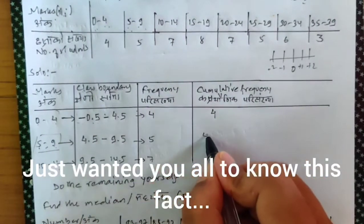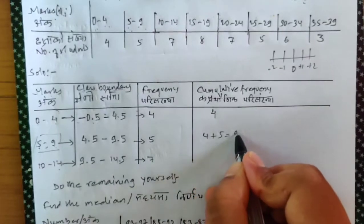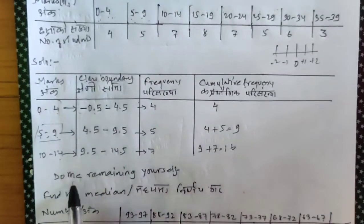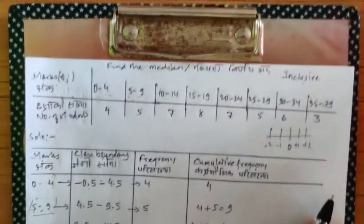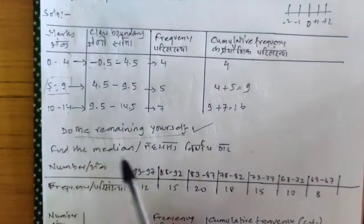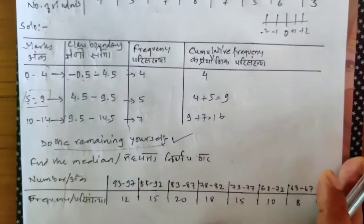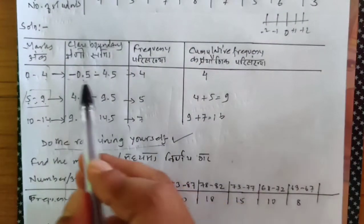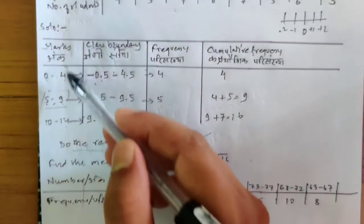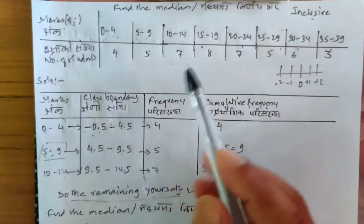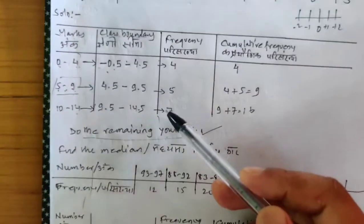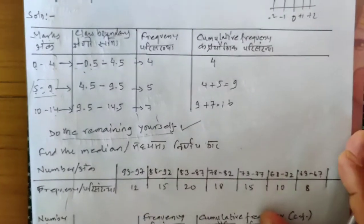Fill up the cumulative frequency yourself: 4, then 4 plus 5 equals 9, then 9 plus 7 equals 16, and continue the remaining yourself. The only reason I did this question was to show that 0 would become minus 0.5. There are 8 more tables to fill — do those yourself as classwork.